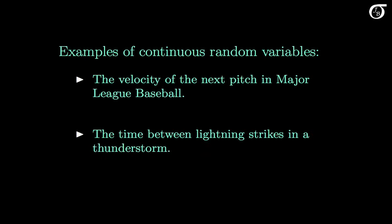The time between lightning strikes is also a continuous random variable. Time, in its nature, is continuous. The time between lightning strikes isn't restricted to integer values like 1 second, 2 seconds, and 3 seconds, but everything in between — like 1.78694 seconds. Once again there is a continuum of possible values, and the time between strikes is a continuous random variable. Variables like height, weight, length, volume, and time are usually continuous.